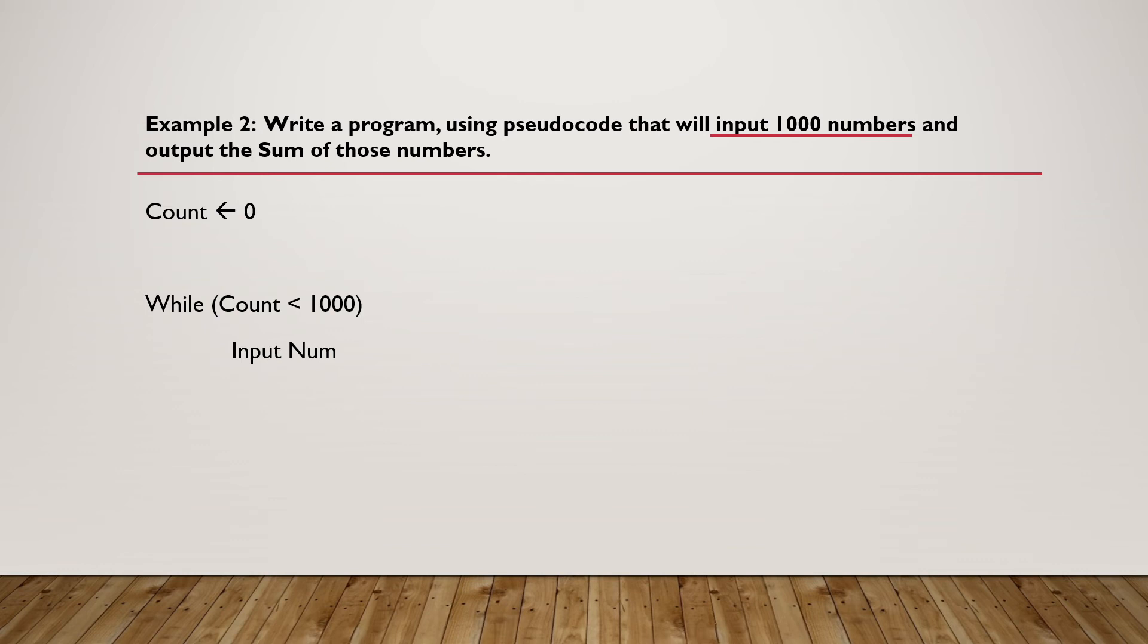Now, given that we have to calculate the sum, we have to initialize the sum to zero. Sum will be sum plus number. Don't forget to increment our count, and then we can end our loop. Lastly, we are going to output the value of sum.